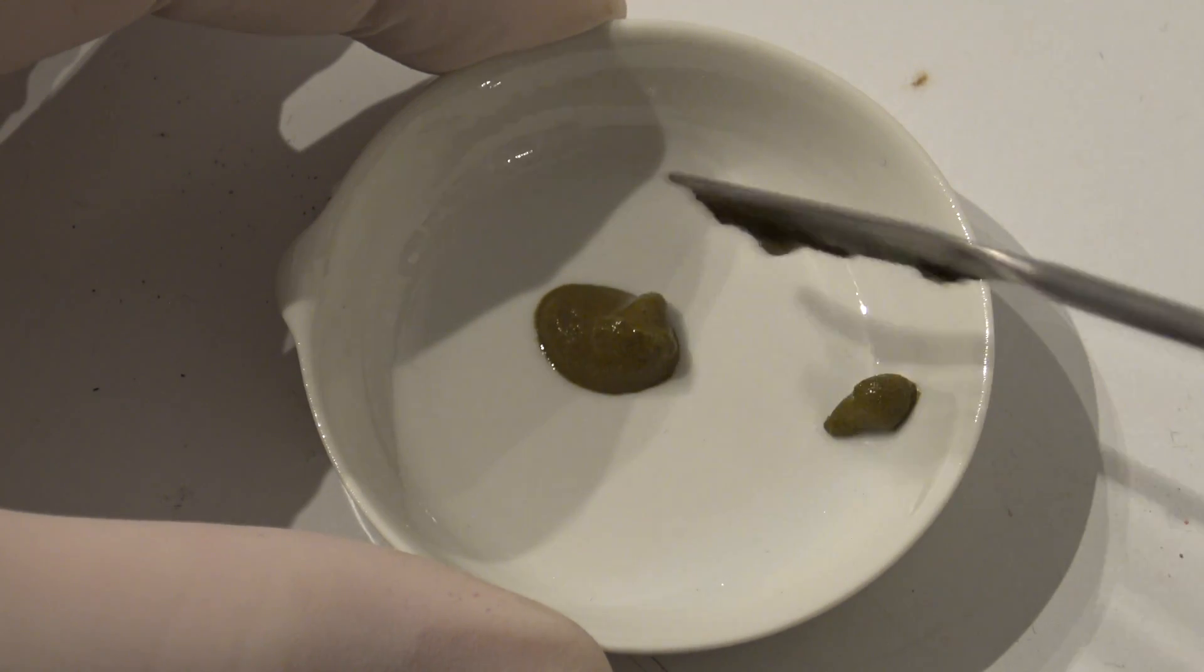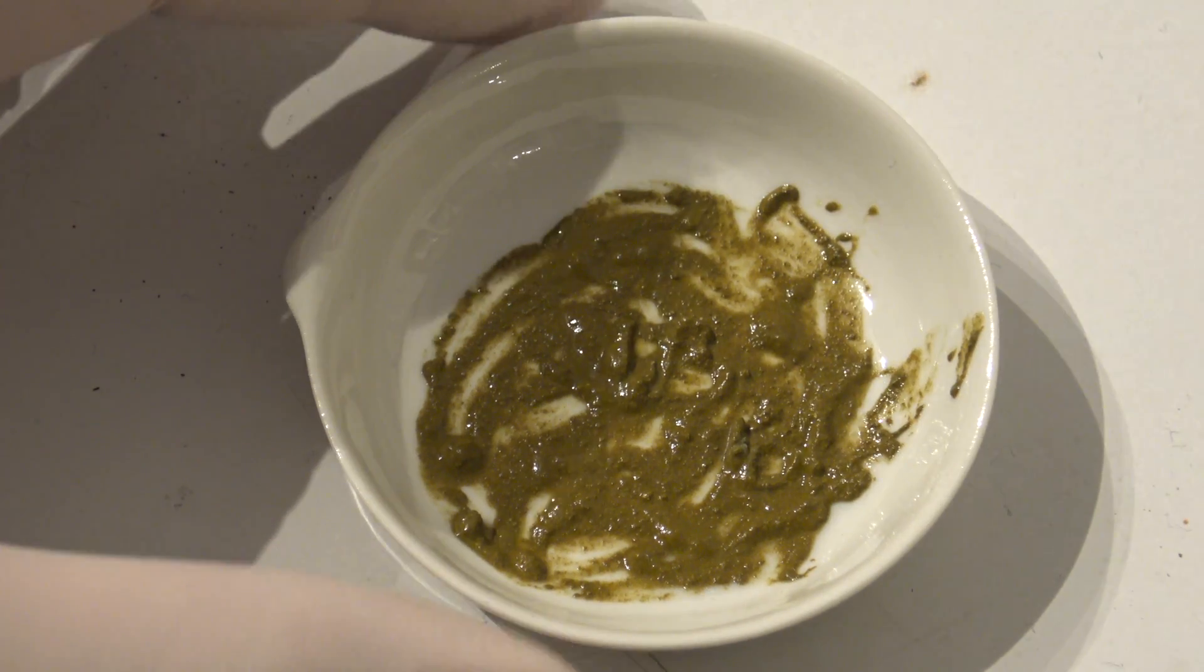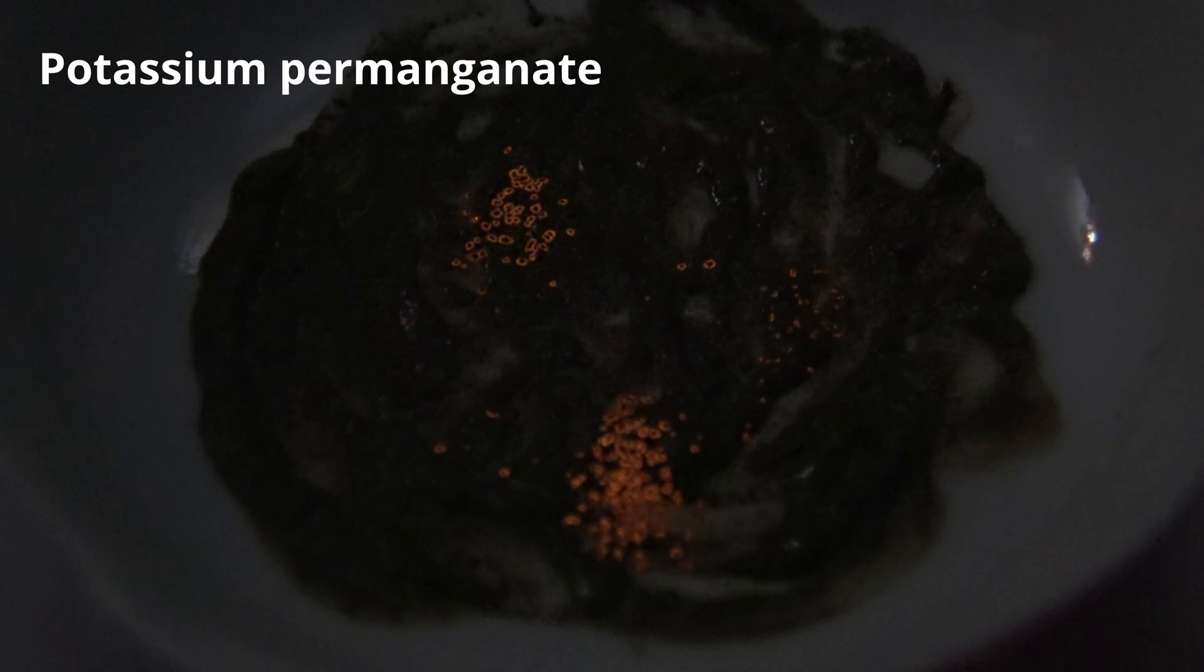First, some were spread out in a porcelain dish. Then the lights were turned off and potassium permanganate was carefully sprinkled over the siloxene, which still had traces of acid on it. An orange chemiluminescence can be observed.